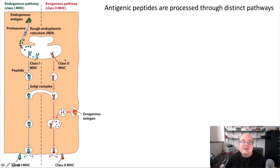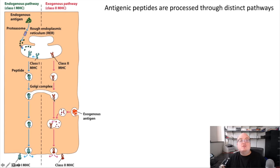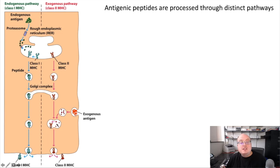As you can see, class II starts its life in the endoplasmic reticulum, like all proteins — it needs to be made there. It ends up being trafficked through the secretory apparatus, and it meets up with vesicles containing exogenous antigens late during its life cycle. So the loading of exogenous antigens onto MHC class II happens within endocytic compartments.